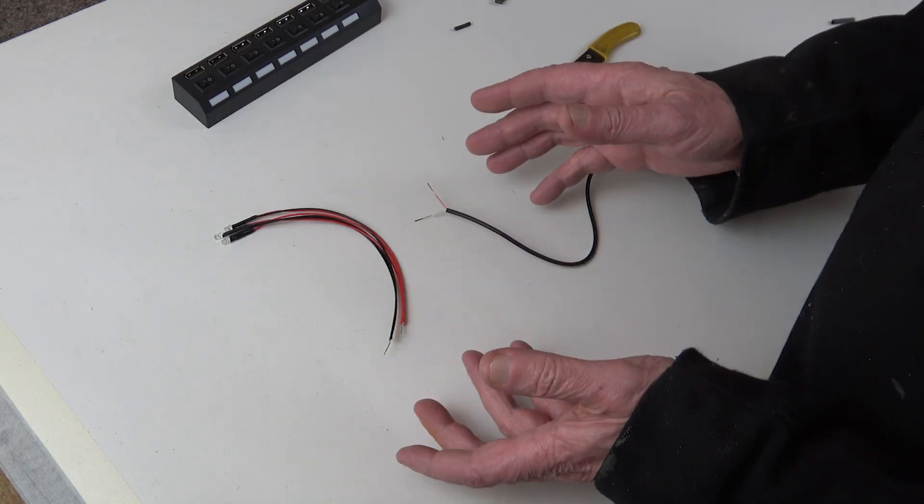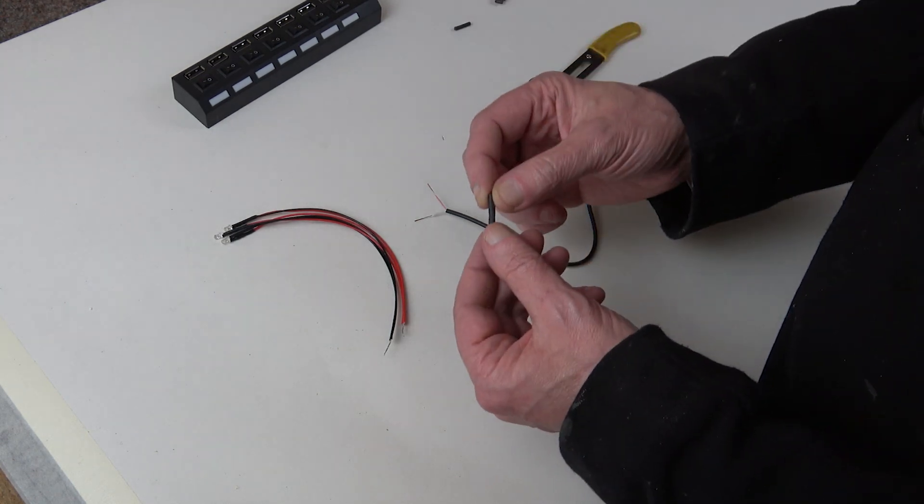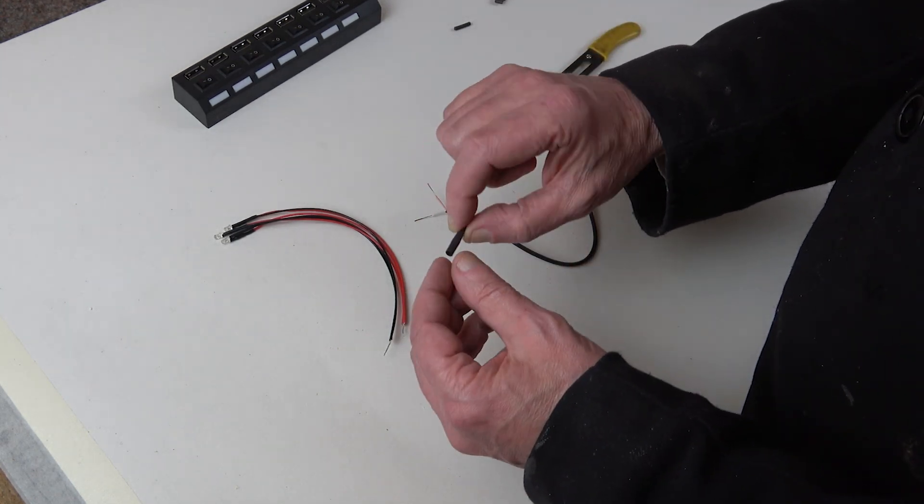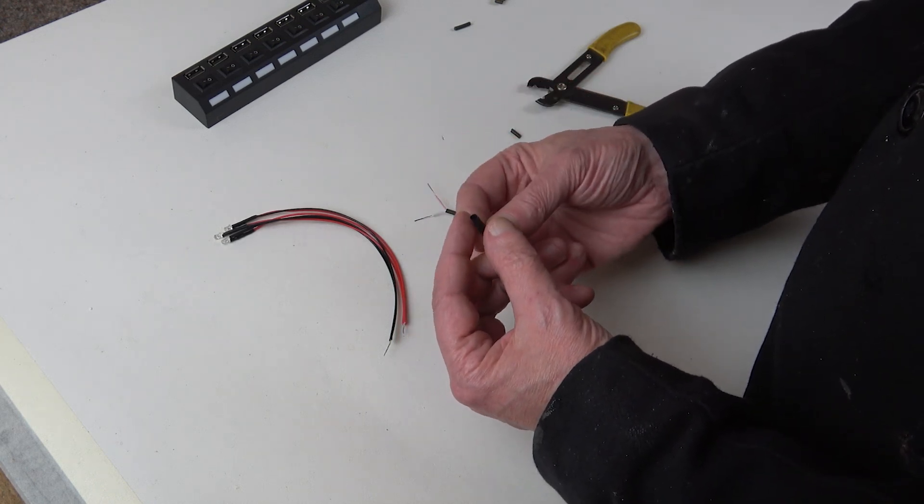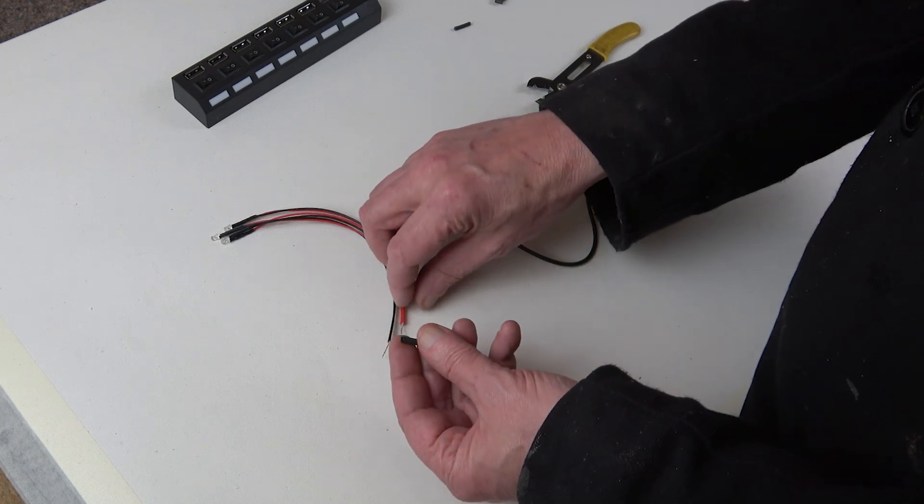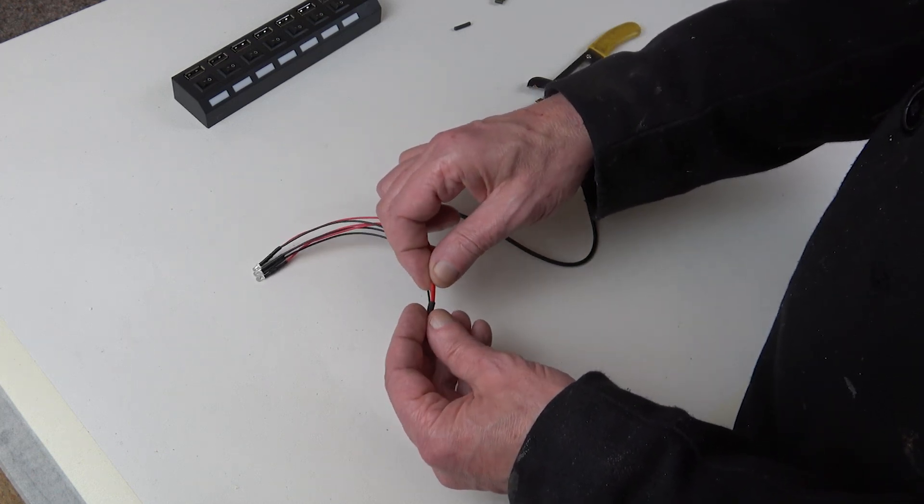So in order to join these together, obviously I'm going to solder them. What I'm going to do first is I'm going to take this little piece of heat shrink plastic, which does exactly what it says - it's a big wide diameter plastic tube. If you heat it up it will shrink.